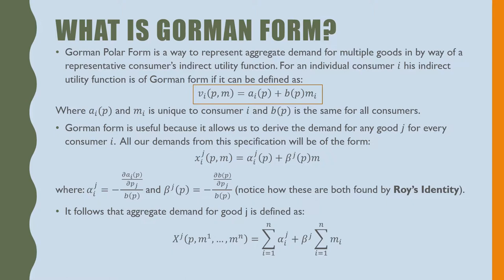Gorman Polar Form is a way to represent aggregate demand for multiple goods by way of a representative consumer's indirect utility function. For an individual consumer I, his indirect utility function is of Gorman form if it can be defined as V(p,m) = A(p) + B(p)m, where A(p) and m are unique to consumer I and B(p) is the same for all consumers.